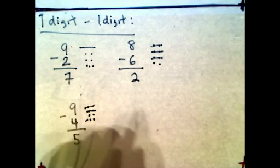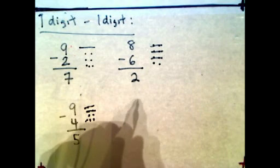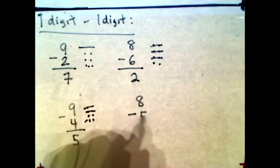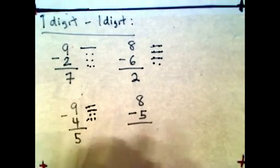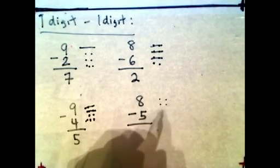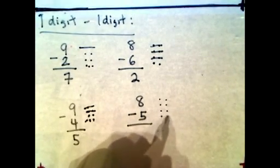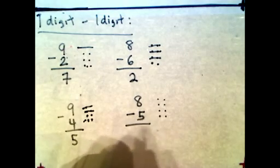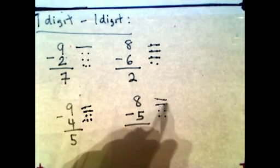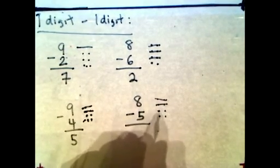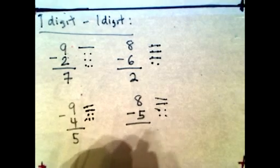Let's look at the last one-digit example. Let's say you have 8 minus 5. So 1, 2, 3, 4, 5, 6, 7, 8. We want to get rid of 5: cross out 2, 4, 5. So what's left over? 1, 2, 3. The answer is 3.